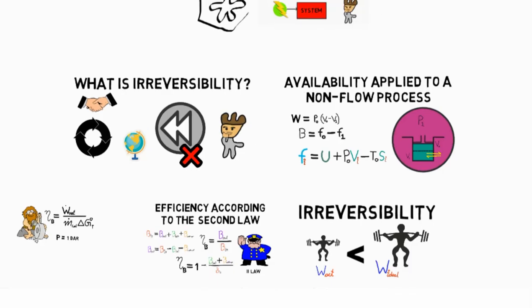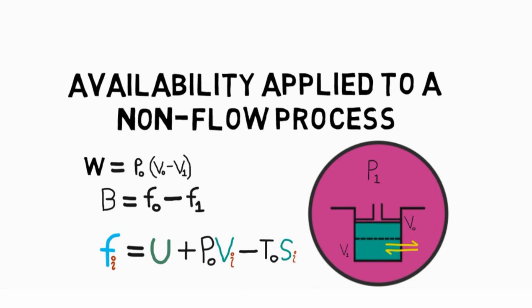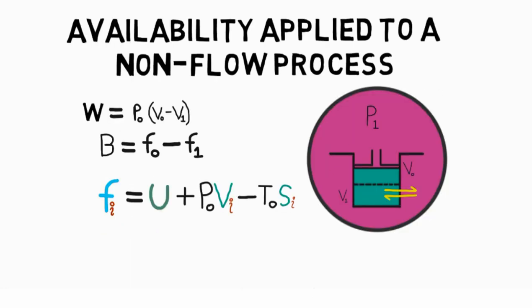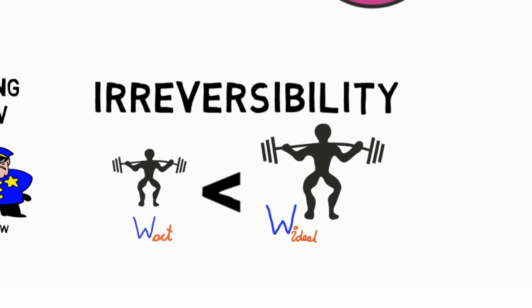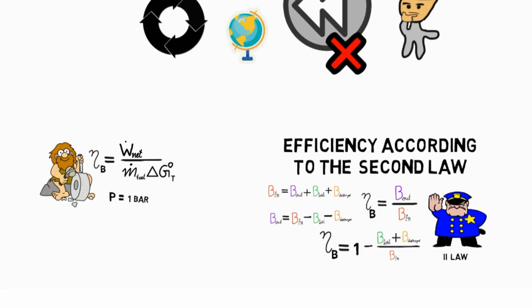Hence, we first saw what availability applied to a non-flow process is, then found out what irreversibility is, and then defined efficiency according to the second law.